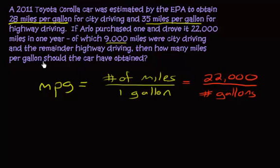That's why we broke it up into two parts. We have the city driving. Now in the city, okay, he's, where is it at, 28 miles per gallon, and he drove in the city 9,000 miles. Okay?